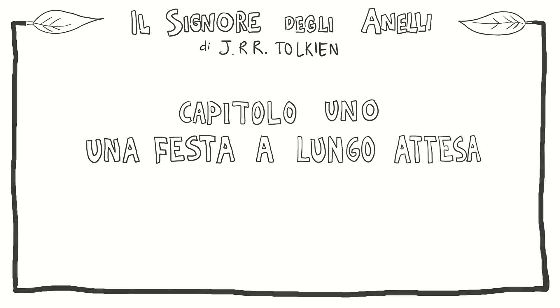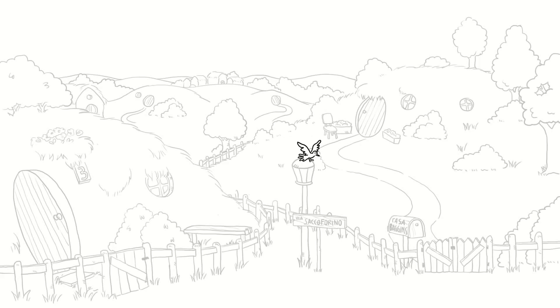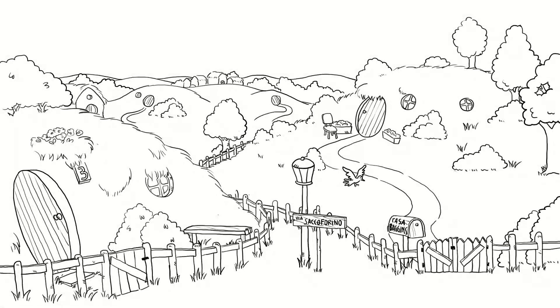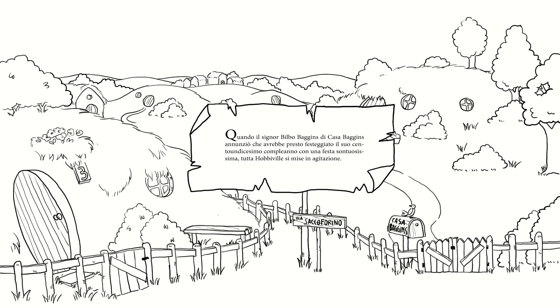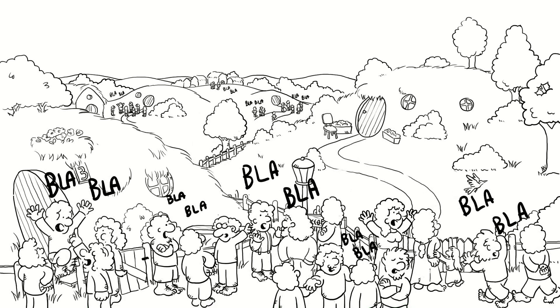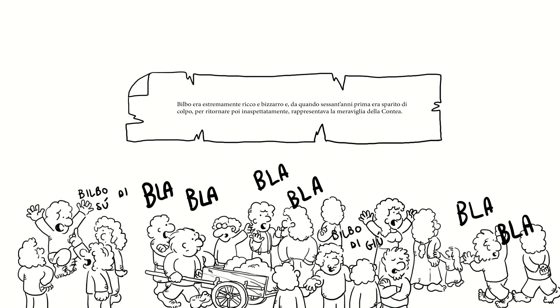Capitolo 1: Una festa a lungo attesa. Buona lettura. Quando il signor Bilbo Baggins di Casa Baggins annunziò che avrebbe presto festeggiato il suo 111esimo compleanno con una festa sontuosissima, tutta Hobbiville si mise in agitazione. Bilbo era estremamente ricco e bizzarro e da quando, 60 anni prima, era sparito di colpo per ritornare poi inaspettatamente, rappresentava la meraviglia della Contea.